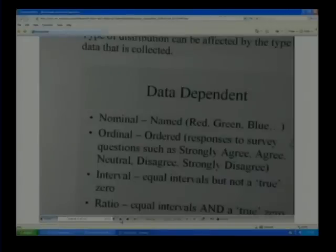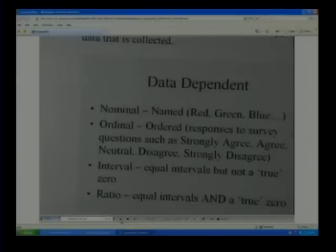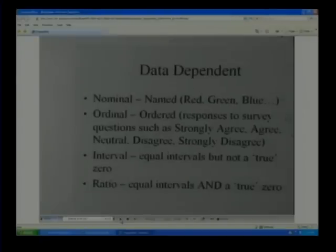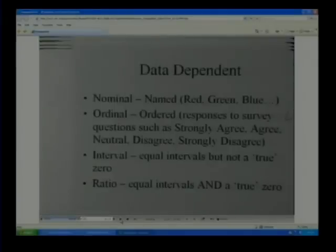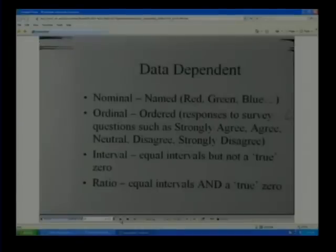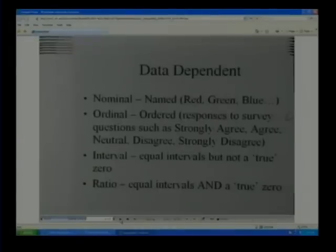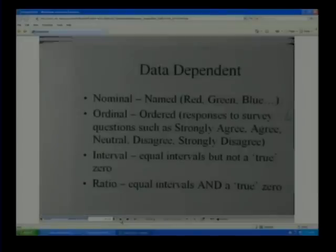And the interval, interval and ratio, in both of them has an equal interval, but the interval does not have a true zero. A zero that means something. And the ratio has equal intervals and a true zero. So test scores would be like a ratio where a zero means you got everything wrong.